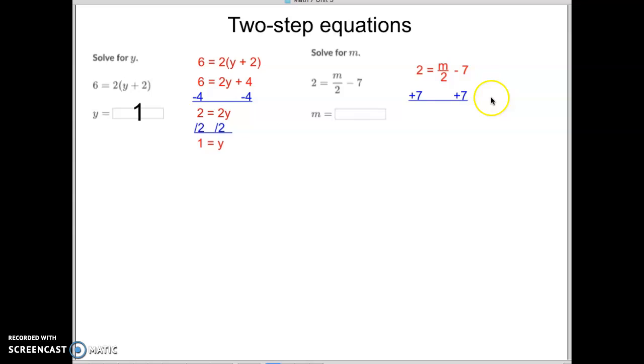Hopefully, I hope you said add 7. That way, these two would cancel. But whatever we do to one side of the equation, we must do to the other. 2 plus 7 is 9. So we have 9 equals m divided by 2.